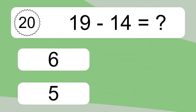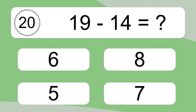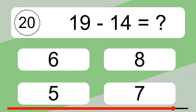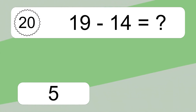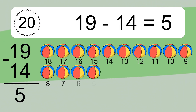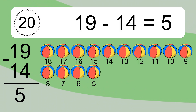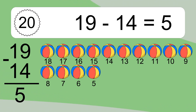19 minus 14 equals what? 19 minus 14 equals 5. Let's count it: 18, 17, 16, 15, 14, 13, 12, 11, 10, 9, 8, 7, 6, 5.